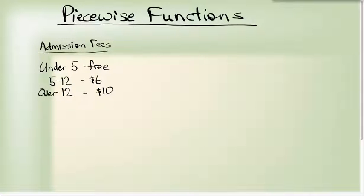Admission fees. Admission fees are a good example of a piecewise function because you have different rates for different ages. For example, admission fee for getting into a hockey game or a movie theater. If you're under five in our example, you'd get in for free. If you were from five to twelve, it costs six dollars. And if you were over twelve, it would cost you ten dollars.